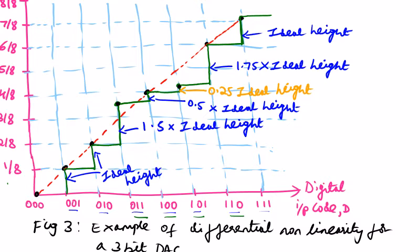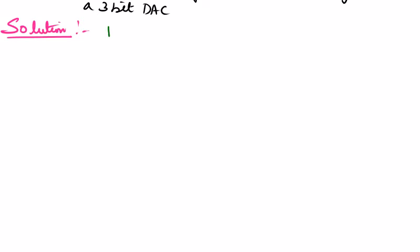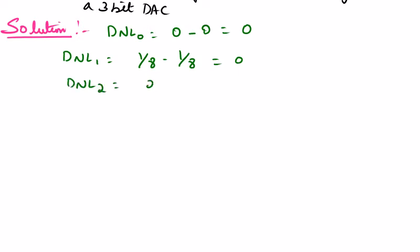From the transfer curve we can inspect which step heights differ. Once we know whether the step height is decreased or increased, we can see 1 LSB from the graph. We can then solve the problem for DNL and plot a DNL curve for the 3-bit DAC. DNL(0) is 0 because actual height minus ideal height are both 1 LSB. DNL(1) is also 0: actual minus ideal is 1/8 minus 1/8. DNL(2) is also 0: 2/8 minus 2/8 equals 0.